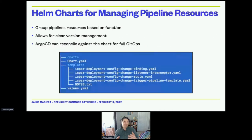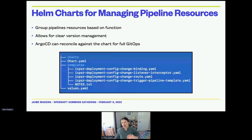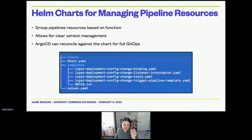Here's an example of a Helm chart for managing pipeline resources. It groups pipeline resources based on function, allows for clear version management, and Argo CD can reconcile against the chart for full GitOps. This is an example of a Tekton pipeline with a webhook — you have the binding and the listener, which listens for incoming connections and maps them, then directs that to a route, which directs it to a pipeline. We have this in a Helm chart and a values file allows us to have particular values when the chart gets deployed.